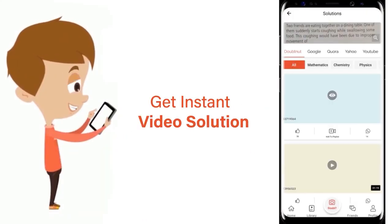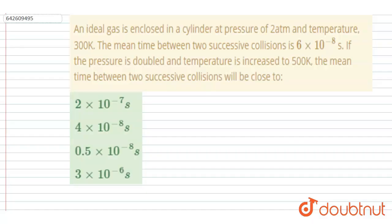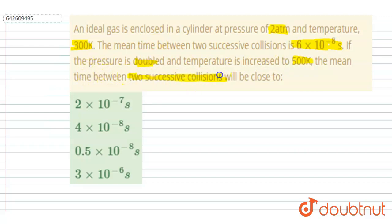An ideal gas is enclosed in a cylinder at a pressure of 2 atm and temperature 300 Kelvin. The mean time between two successive collisions is 6 into 10 to the power minus 8 seconds. If the pressure is doubled and temperature is increased to 500 Kelvin, the mean time between two successive collisions will be close to?